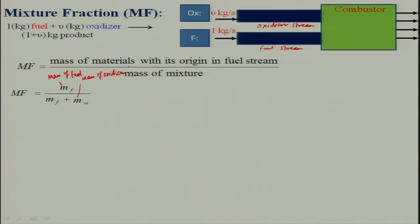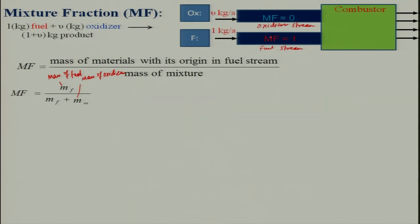For the fuel stream, the oxidizer will be zero — there is no oxidizer in the fuel stream — therefore M_f will be 1. For the oxidizer stream, the fuel will be zero, so therefore the mixture fraction will be 0. In the fuel stream there is no oxidizer, so mixture fraction is 1; in the oxidizer stream there is no fuel, so mixture fraction is 0.